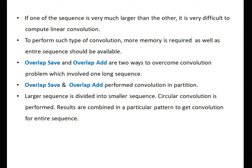If one of the sequences is very large than the other, it is very difficult to compute linear convolution. To perform such type of convolution, more memory is required as well as the entire sequence should be available for computation. Overlap save and overlap add are two ways to overcome the convolution problem which involves one long sequence. Both overlap save and overlap add perform convolution in a partitioned way. The larger sequence is divided into smaller sequences. Circular convolution is performed repetitively on the small sets of sequences and results are combined in a particular pattern to get convolution for the entire sequence.